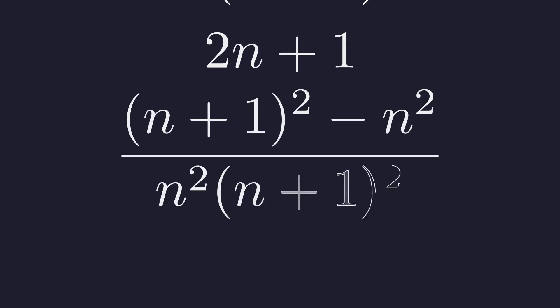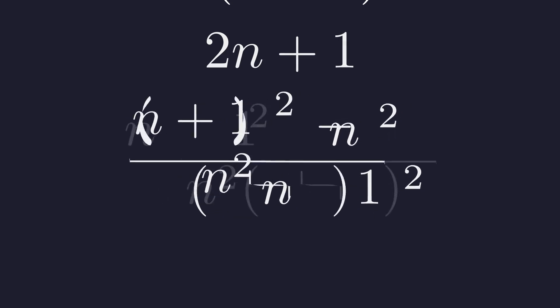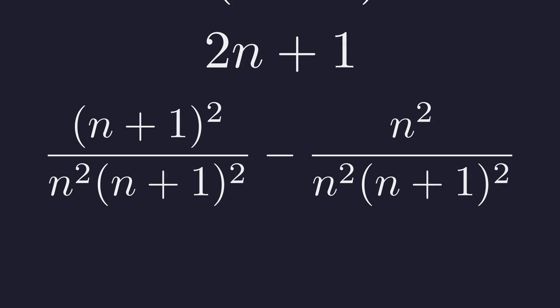With this substitution, the structure becomes much clearer. Now, watch what happens when we split this into two separate fractions. Splitting the fraction gives us two terms. Notice the opportunity for cancellation in each term.